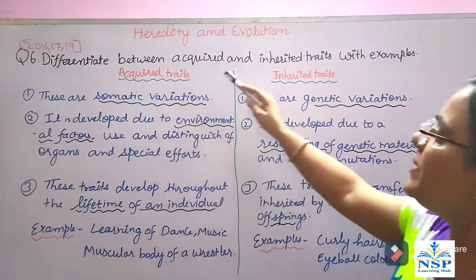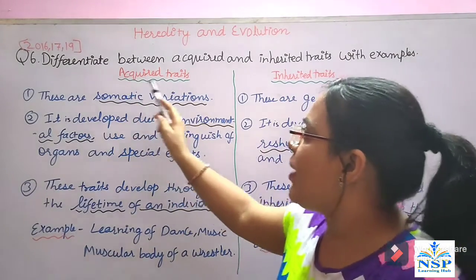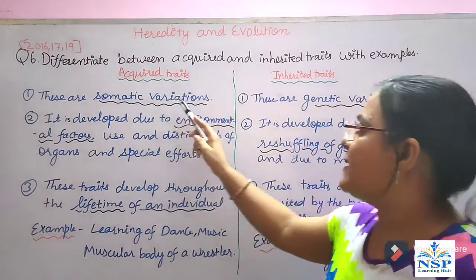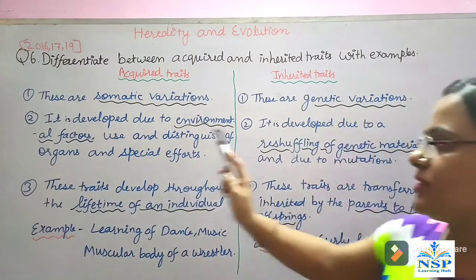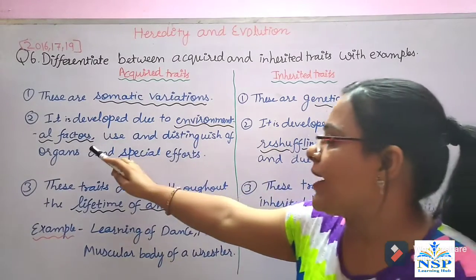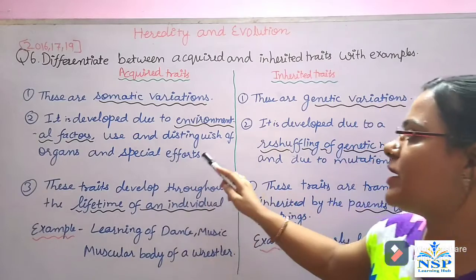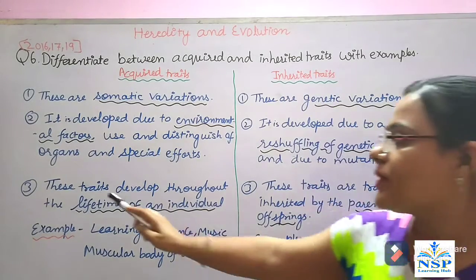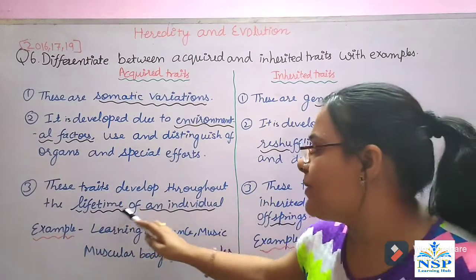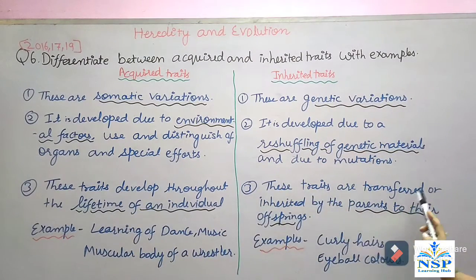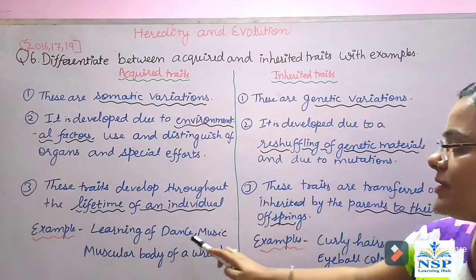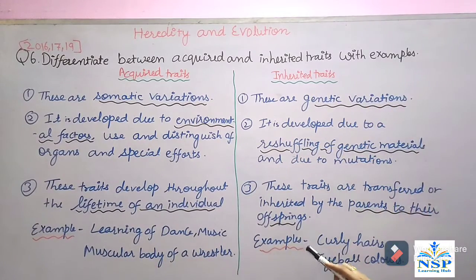Next important question: Differentiate between acquired and inherited traits with examples. Acquired traits are somatic variations — changes in all cells other than genetic cells — developed due to environmental factors. Inherited traits are genetic variations developed due to reshuffling of genetic material or mutation, and are transferred from parents to offspring. Examples of acquired traits: learning of dance and music, and muscular body of a wrestler. Examples of inherited traits: curly hair and eye colour.